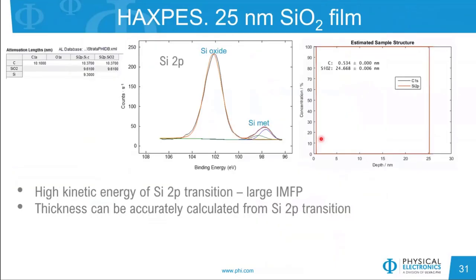Another example pushes the limits of sampling depth: HAXPES analyzing a 25 nanometer silicon oxide film. Using the chromium source at 5400 eV, the kinetic energy of the silicon 2p electron is approximately 5300 eV, resulting in a high attenuation length. The sampling depth is 9.6 nm × 3 × sine(45°), allowing probing of such thick films. Stratify accurately models the thickness of this 25 nm silica film and also shows the thickness of the carbon overlayer.